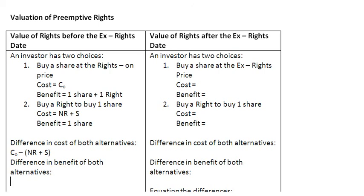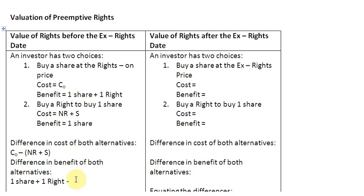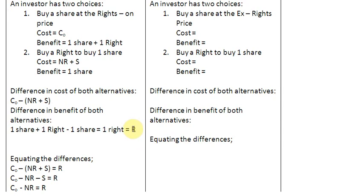With the first alternative you get one share plus one right, and with the second you get one share. So the difference in benefits is: (one share + one right) minus (one share). The one-share terms cancel out, and you are left with simply one right, which we denote by R.